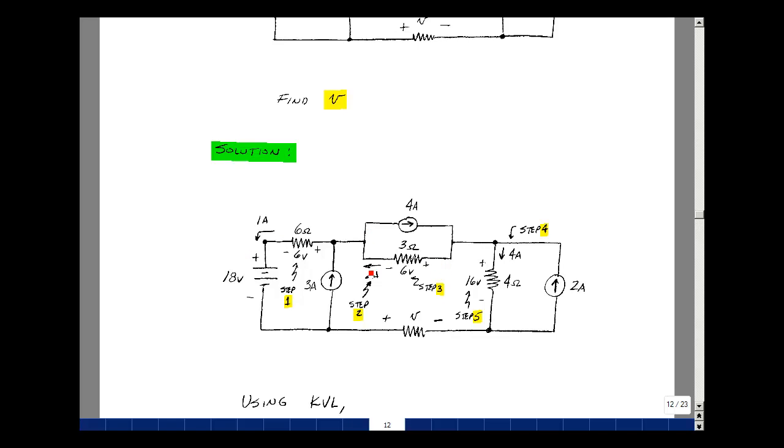Knowing that current, I could then find the voltage across the resistance. It would be the 2 amps times the 3 ohms, or 6 volts. That's my third step.